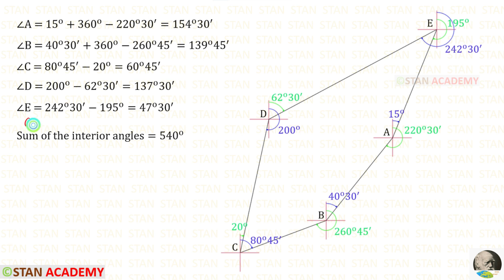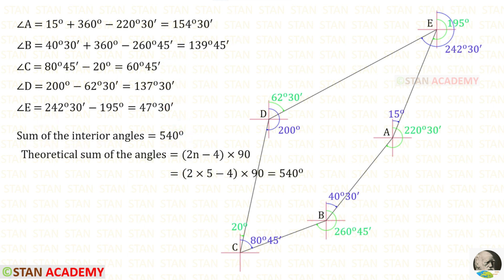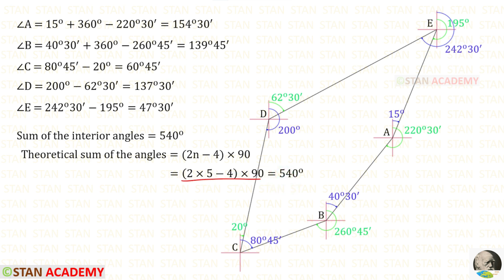Now we are going to apply a check. For that, first we have to find the sum of the interior angles. We have to add all these 5 angles. When we add, we will get 540 degrees. The formula to find the theoretical sum of the angles is (2N − 4) × 90 degrees. Here, the number of stations is 5, so N is 5. When we calculate this, we will get 540 degrees. Since both of the angles are 540 degrees, hence the check is satisfied.